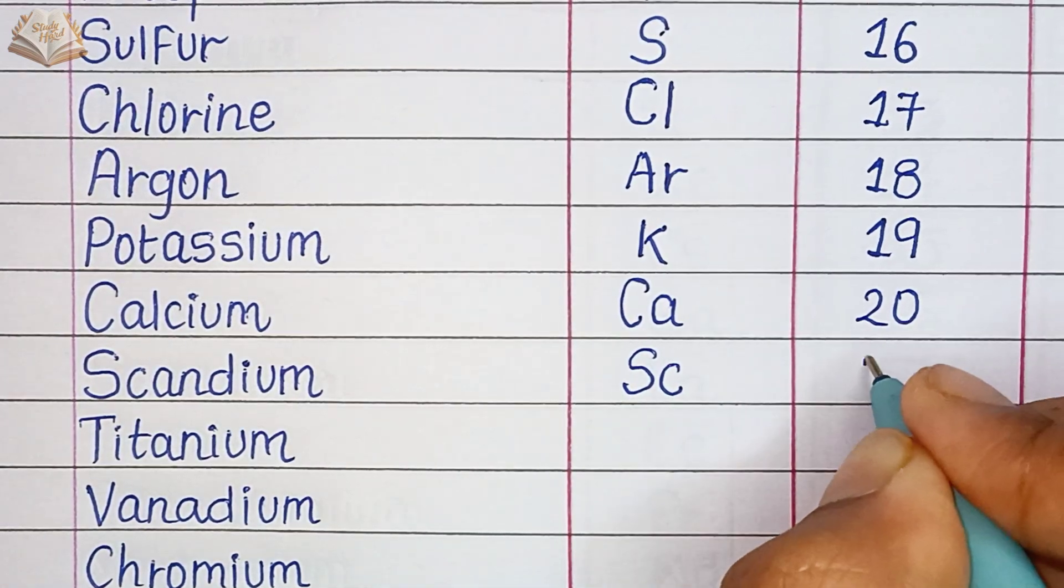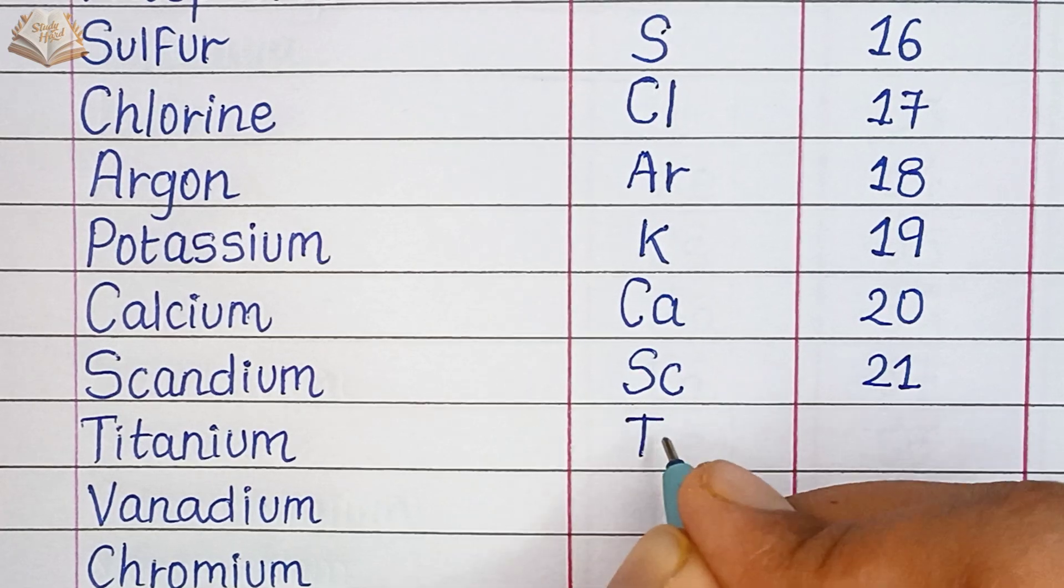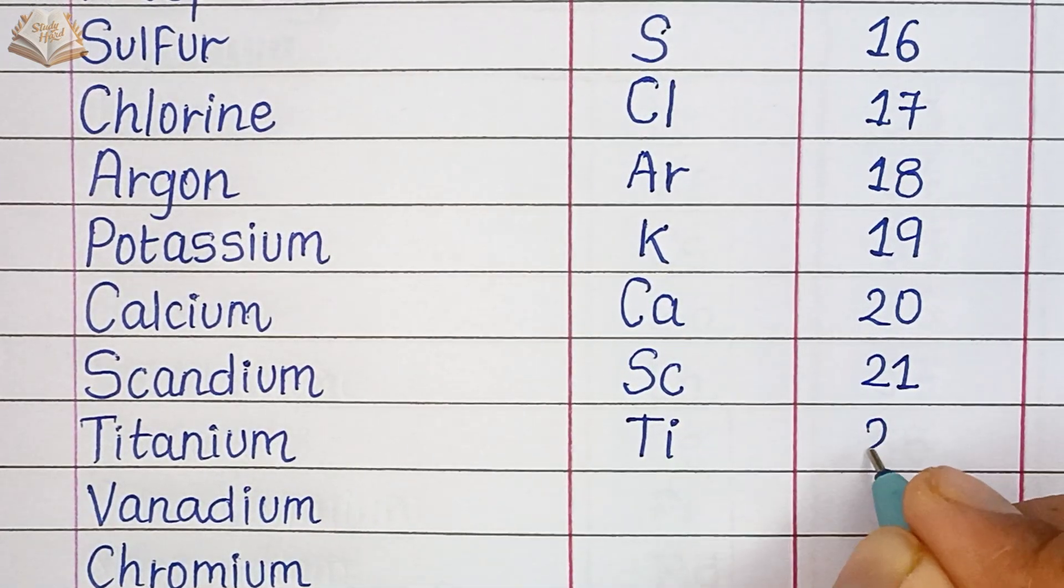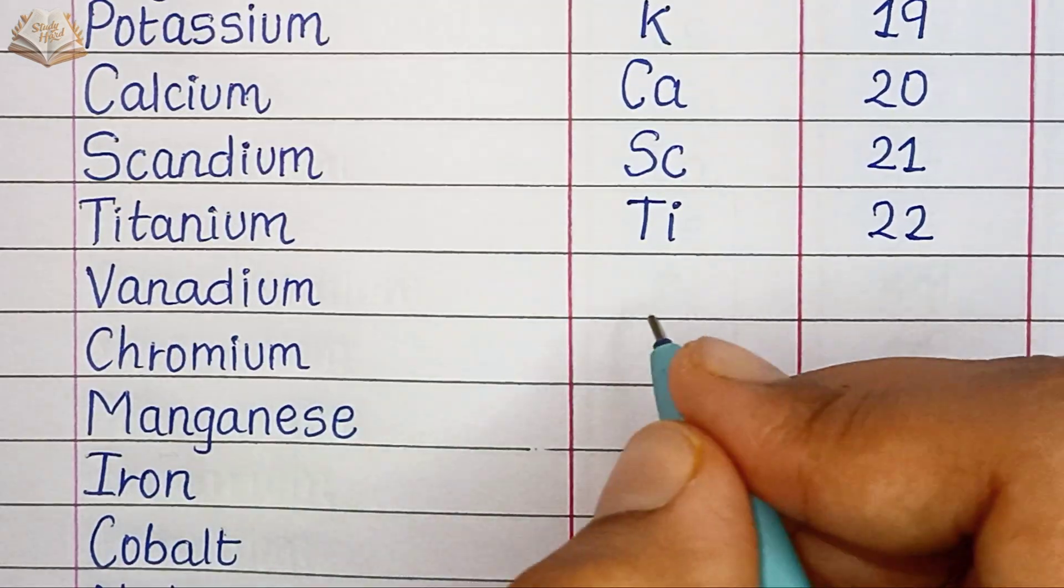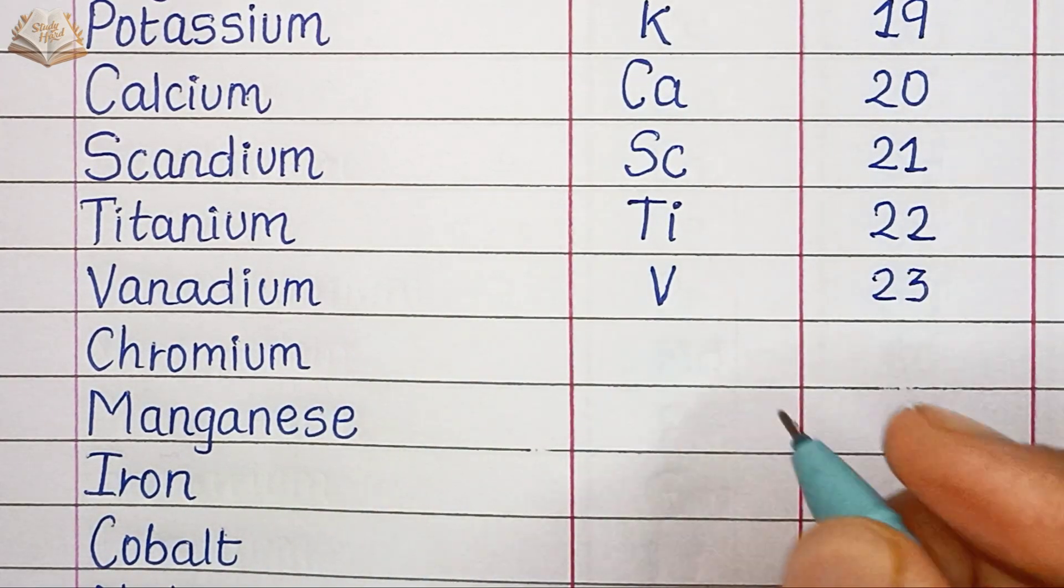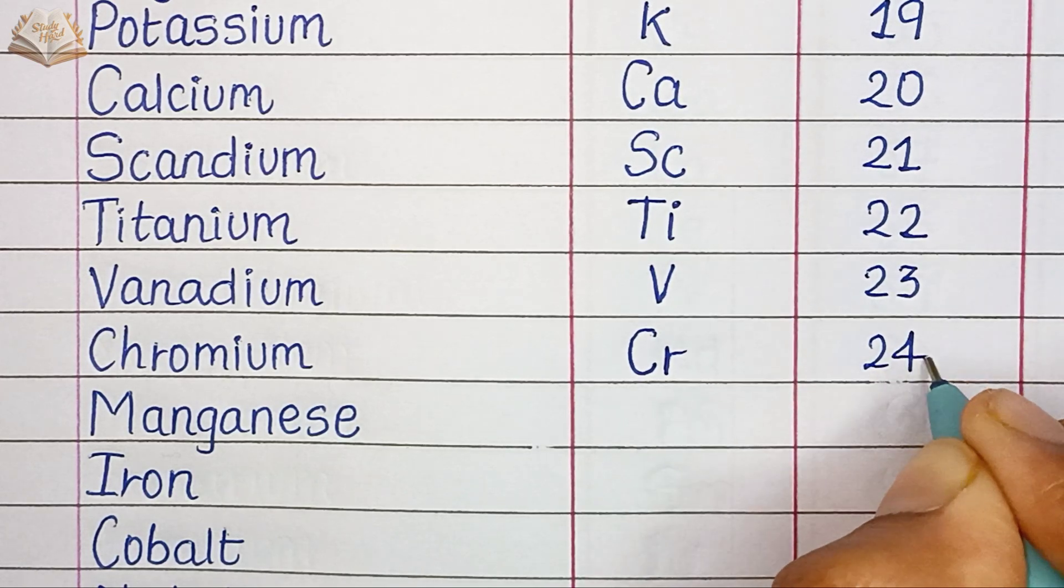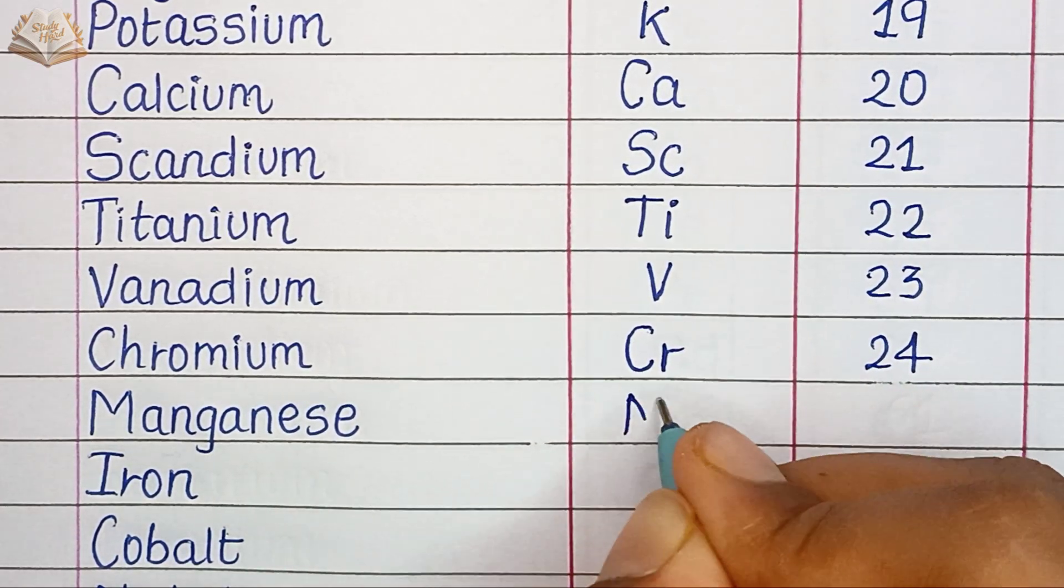Potassium, K, atomic number 19. Calcium, Ca, atomic number 20. Scandium, Sc, atomic number 21. Titanium, Ti, atomic number 22. Vanadium, V, atomic number 23. Chromium, Cr, atomic number 24. Manganese, Mn, atomic number 25.